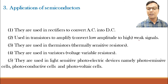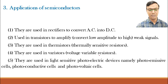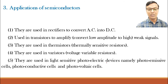Due to amplification, we are getting the signal many times larger as compared to the input signal. They are used in thermistors, that is thermally sensitive resistors — resistors which are sensitive to temperature or heat. When heat is applied, the resistivity decreases and conductivity increases. They are used in varistors or voltage variable resistors. If you apply voltage, resistivity will decrease. They are used in light sensitive photoelectric devices, namely photo emissive cells, photo conductive cells, and photovoltaic cells. Whenever light falls on them, the conductivity increases.